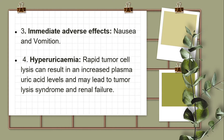7. Immediate adverse effects: nausea and vomiting. 8. Hyperuricemia — rapid tumor cell lysis can result in increased plasma uric acid levels and may lead to tumor lysis syndrome and renal failure.